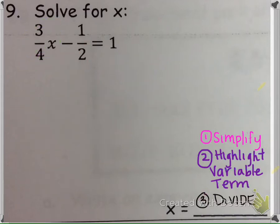Okay, another way we could do this problem is by clearing the denominator. So to do that, we need to think of a number that the denominators 4 and 2 can go into.